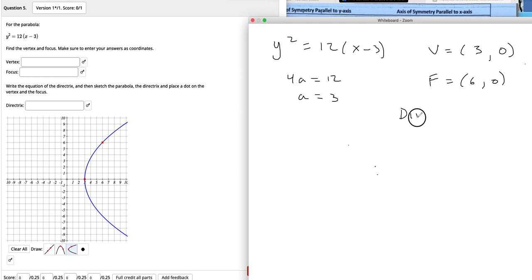And then the directrix, that's going to be back here, because if the focus is 3 forward, then the directrix, in this case, would be 3 behind. So it's this line running up and down.